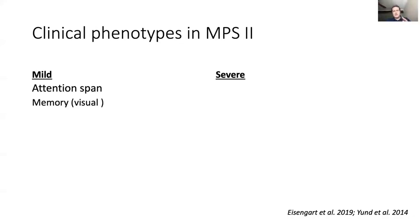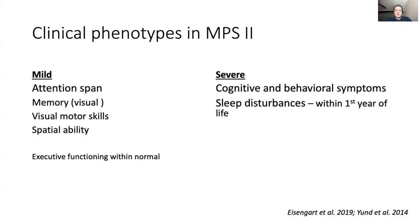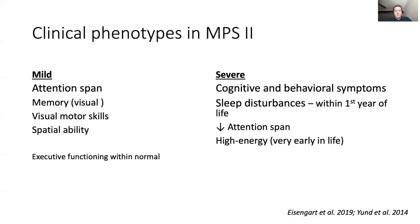For the mild disease, we know there are attention span problems, memory issues especially visual memory, visual motor skills, spatial ability, while executive functioning is within normal. In the severe form, which is three to four times more frequent than the attenuated or mild form, we see cognitive and behavioral symptoms and sleep disturbances within the first year of life. These are very challenging for the child, but also especially for parents and caregivers.